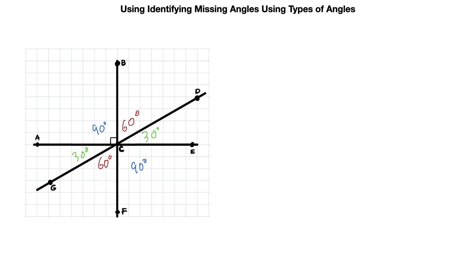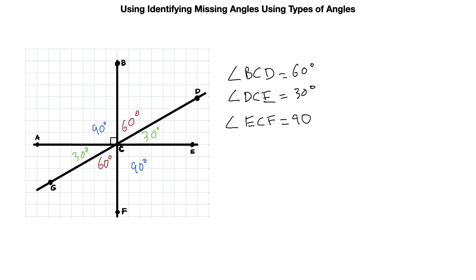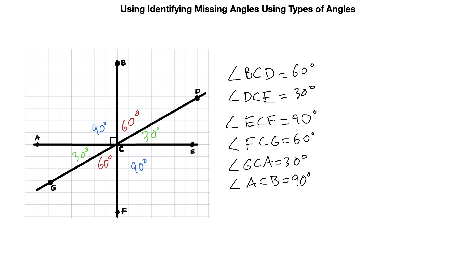Naming all the angles in the figure — always using point, vertex, point with C as the center: angle B, C, D is 60 degrees; angle D, C, E is 30 degrees; angle E, C, F is 90 degrees; angle F, C, G is 60 degrees; angle G, C, A is 30 degrees; and angle A, C, B is 90 degrees. That's how we use vertical, complementary, and supplementary angles to figure out all missing measurements.